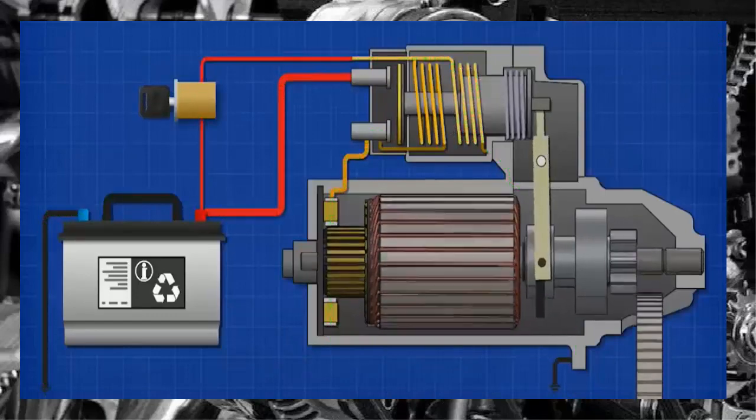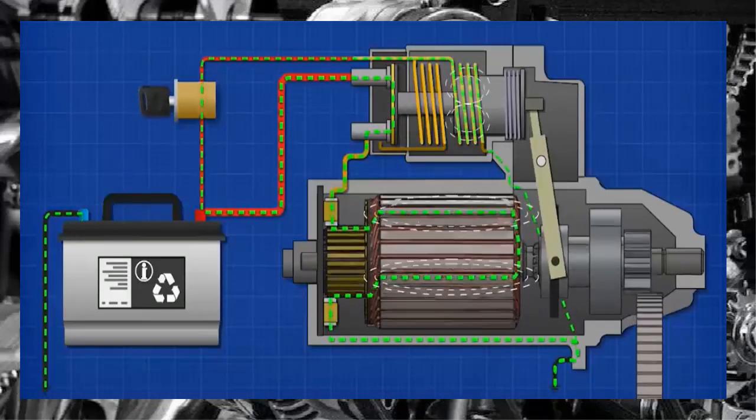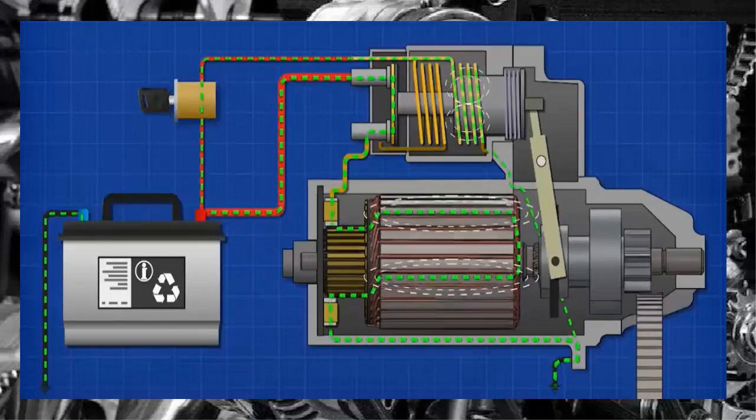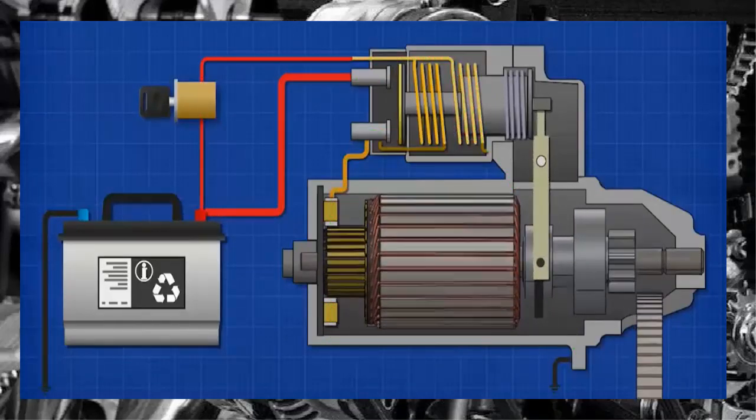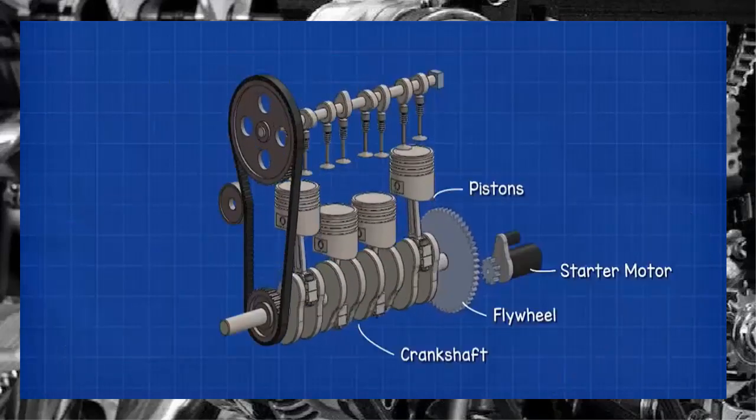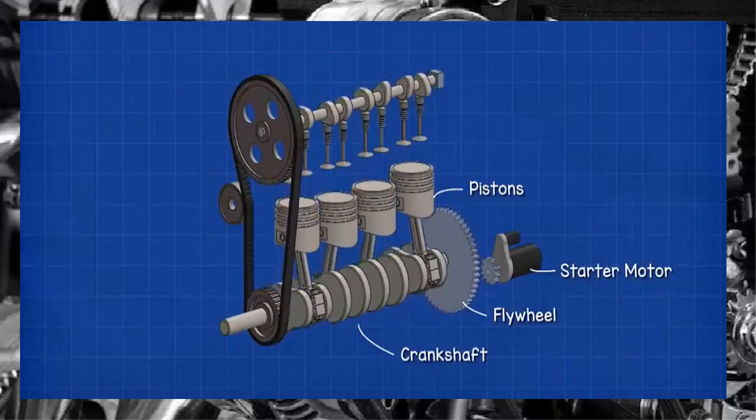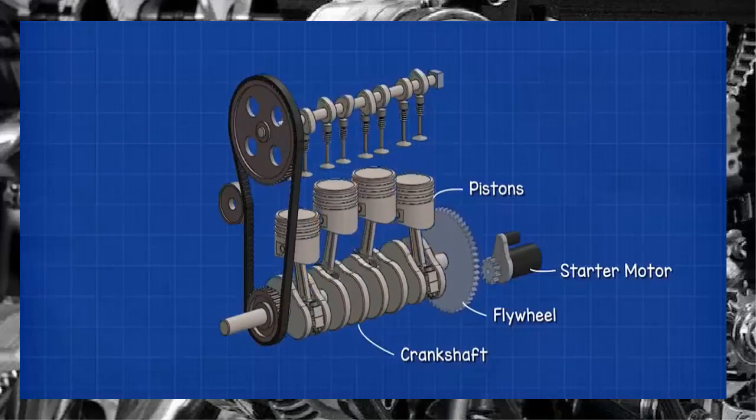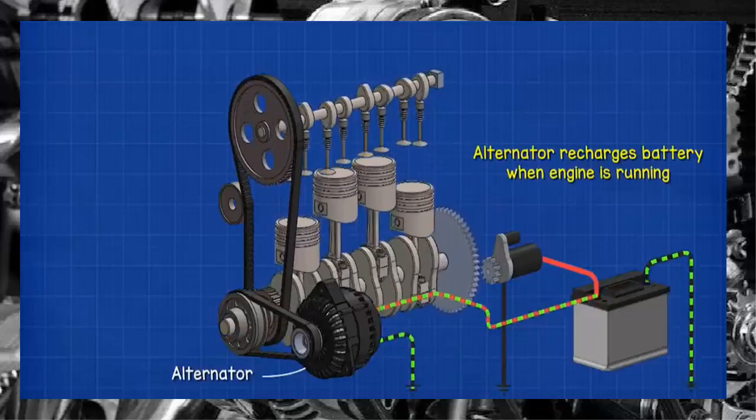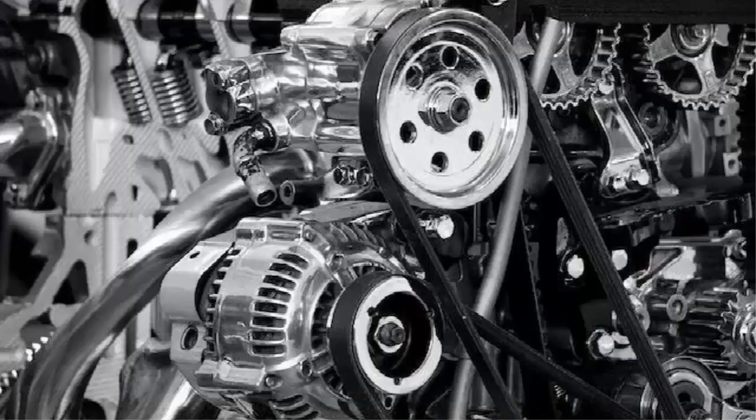When the key is released, it cuts the power to the solenoid coil, which releases the piston. The spring pushes the lever back, removing the pinion gear from the flywheel. The current is cut to the starter motor. The combustion engine continues to run by itself, and the alternator recharges the battery.